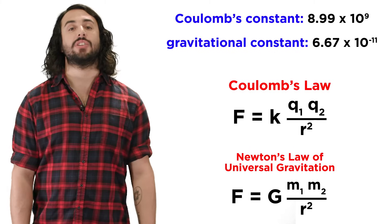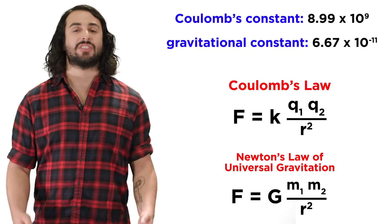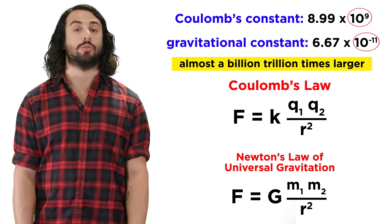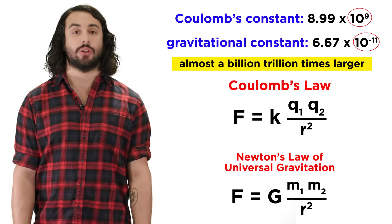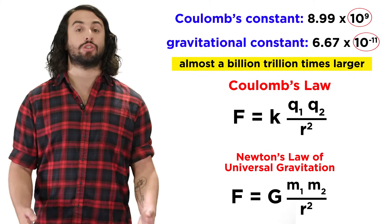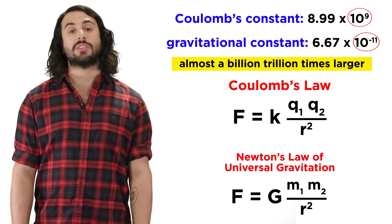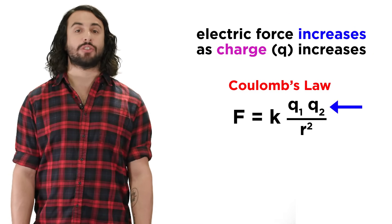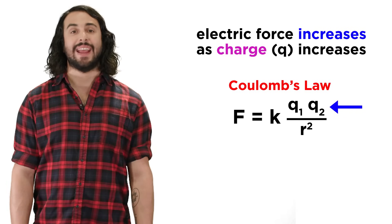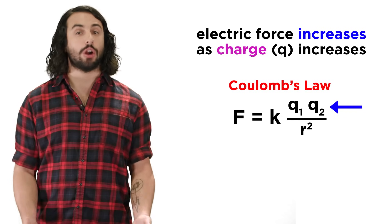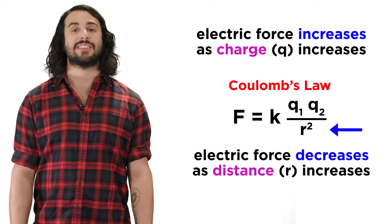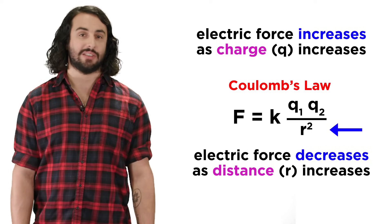Also it is interesting to note that Coulomb's constant is twenty orders of magnitude greater than the gravitational constant, illustrating the discrepancy in the strength of the two forces. This law also tells us that the electric force between two objects increases as charge increases and decreases as the distance between them increases.